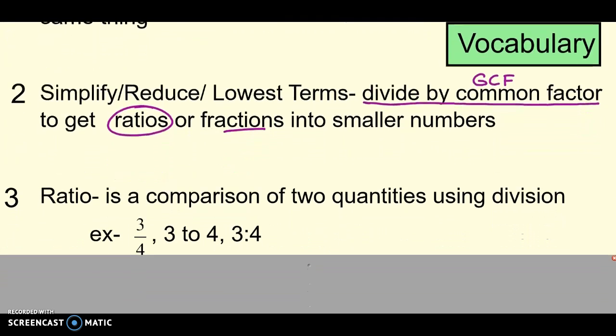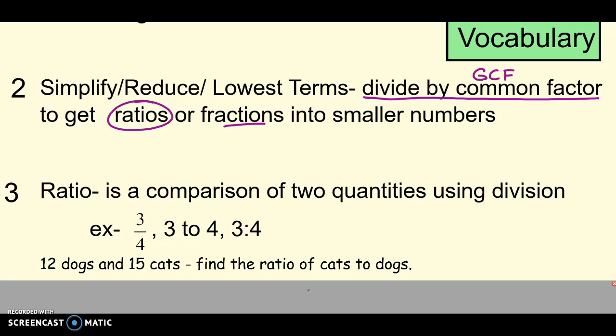And ratio. So a ratio is a comparison of two quantities using division. A lot of times it is written just like a fraction. So I could say the ratio of three to four and write it just like three-fourths. But it means comparing three to four. We also use a colon. And this would be the ratio of three to four. We say the word 'to' there.